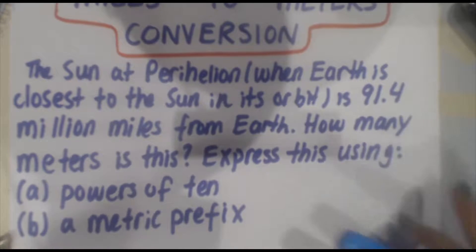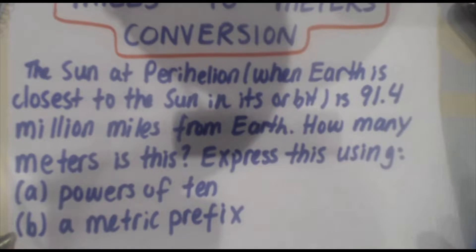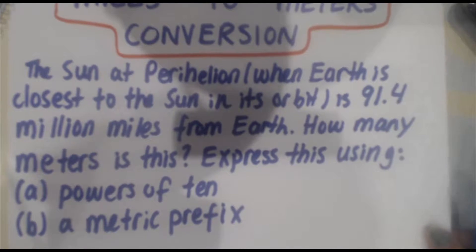We're given a distance, 91.4 million miles. We've got to convert it to meters. It seems pretty straightforward. I'm going to give you a method for solving these types of problems. For this problem, it's going to seem really straightforward and unnecessary, but this type of unit conversion will really save you in the future when you go to more difficult and complex problems. So we're going to go ahead and use something called the GRASP method.